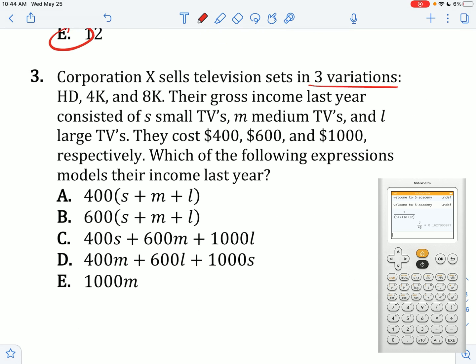Corporation X sells televisions in three variations. Their gross income consists of S small TVs, M medium TVs, and L large TVs at different costs each. Which of the following represents their total income last year? You're just going to multiply each value per TV by the number of TVs and then add them all up, which is C.